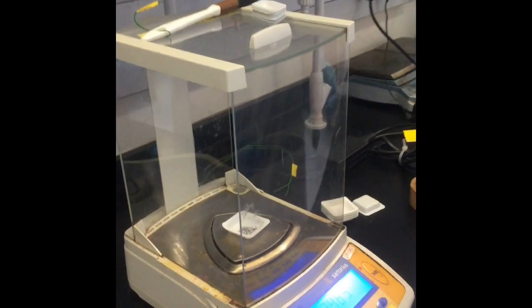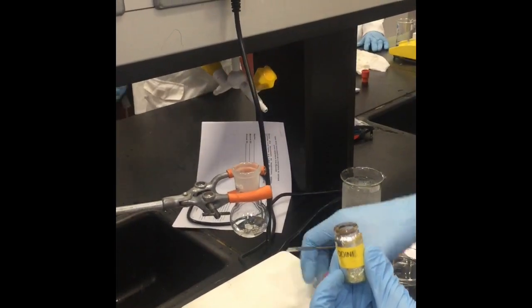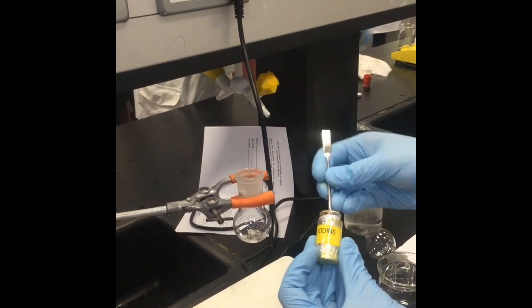Once the magnesium turnings have been placed inside the round bottom flask, add a few iodine crystals into the reaction and watch the color change as the reaction starts.